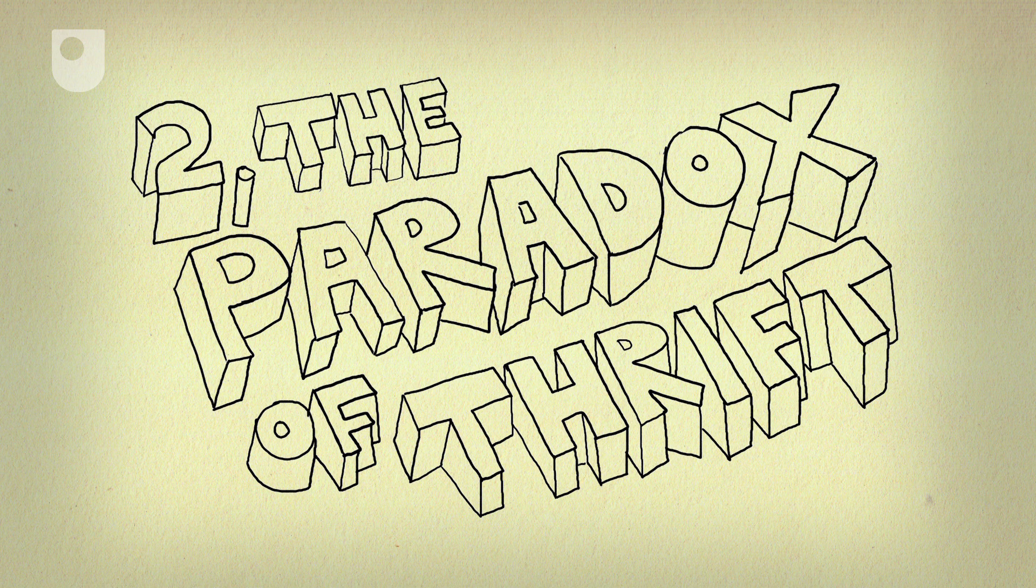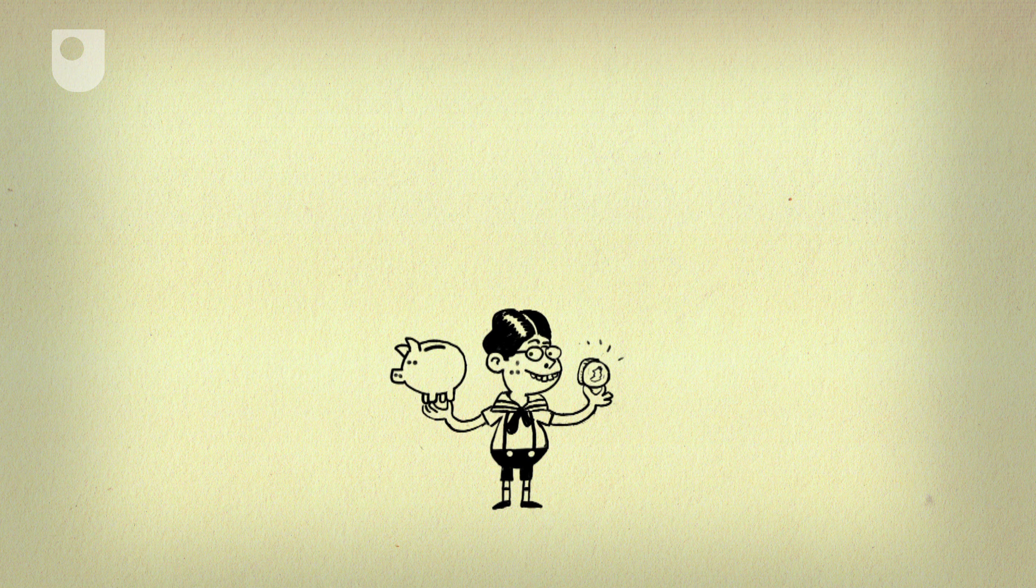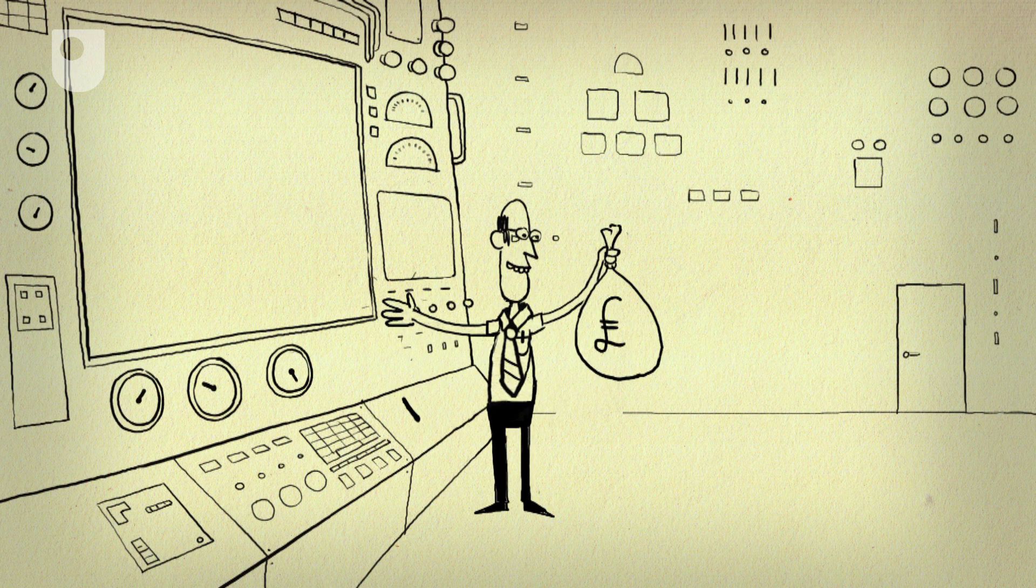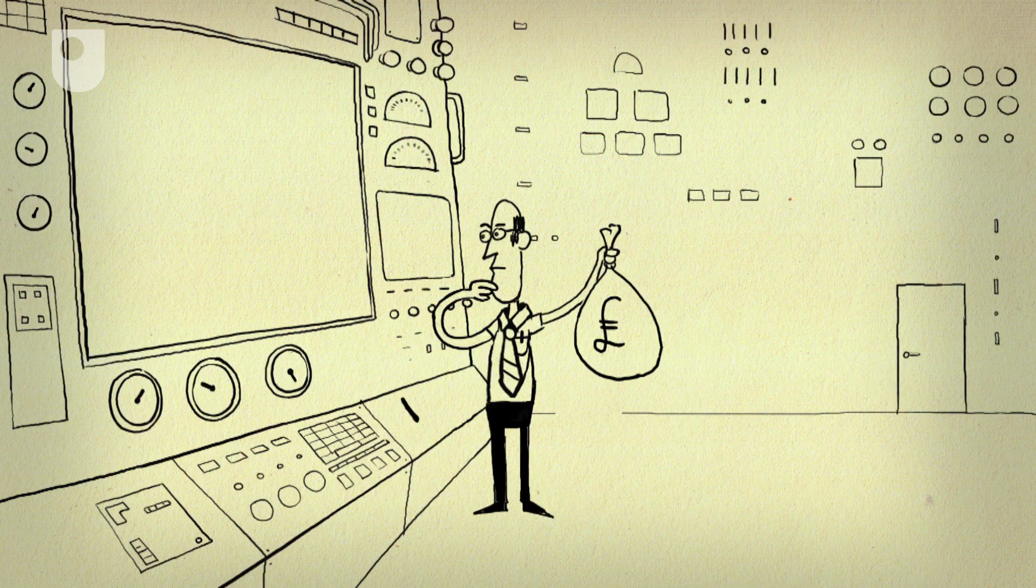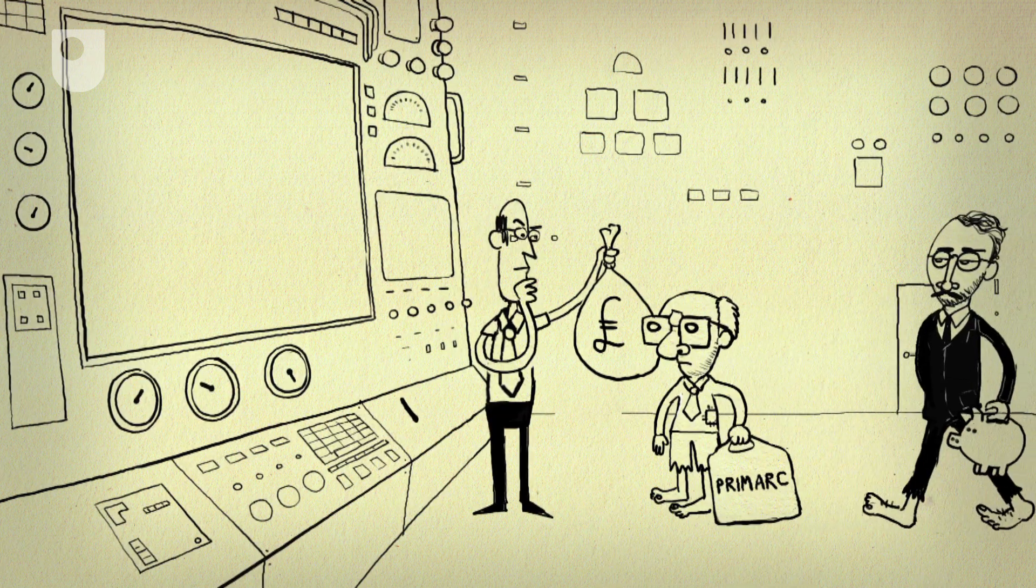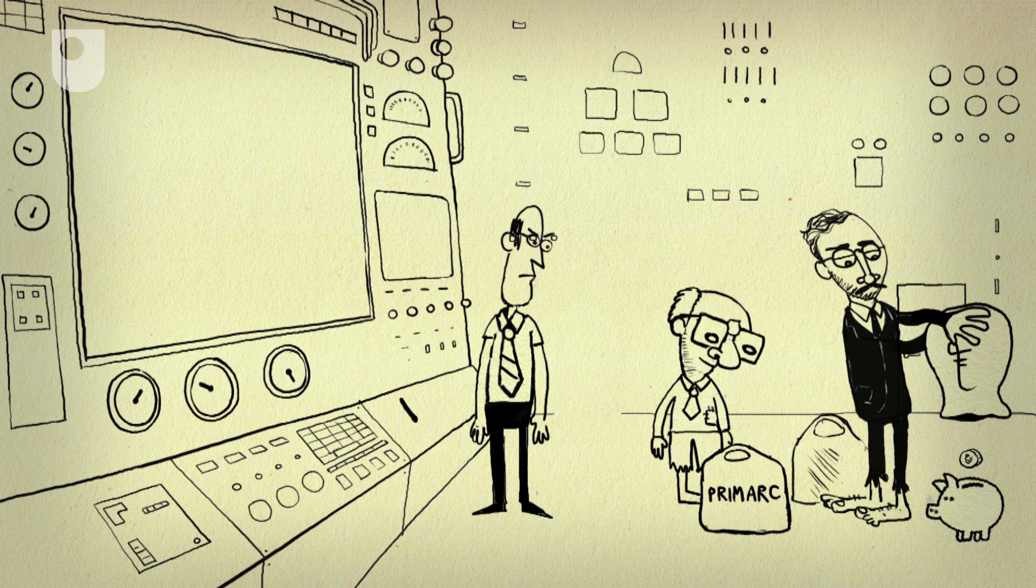Number 2. The Paradox of Thrift. Much like a child getting his pocket money, one of the biggest economic questions is still whether it's better to save or spend. Free marketeers like Hayek and Milton Friedman say that even in difficult times, it's best to be thrifty and save.